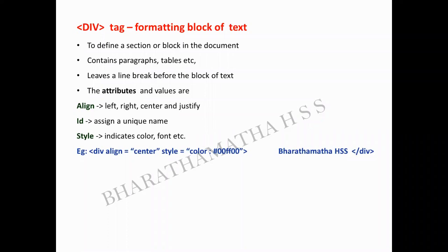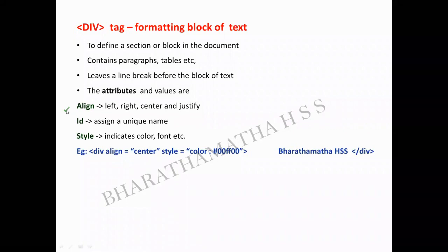What are the attributes? The various attributes include the align attribute — what kind of alignment you want, whether it is left, right, center, or justified. Left means the left-side margin will be in a straight line. Right means the right side will be in a straight line. Center means all contents will be placed at the center of the browser. Justify means both left side and right side will be in a straight line.